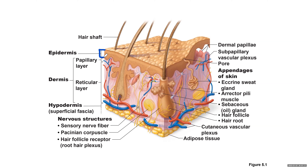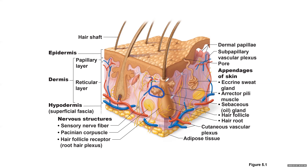Looking at the diagram, you have the epidermis as the superficial layer, then dermis, which is made of two layers: papillary and reticular. The deepest layer is hypodermis or superficial fascia, mostly made of adipose tissue. In the dermis you will see lots of structures such as sweat glands, oil glands, hair follicle and hair root inside the hair follicle, lots of blood vessels, cutaneous vascular plexus, subpapillary vascular plexus, lots of nerve endings, hair follicle receptors, Pacinian corpuscle (a touch and pressure receptor), and the erector pili muscle.